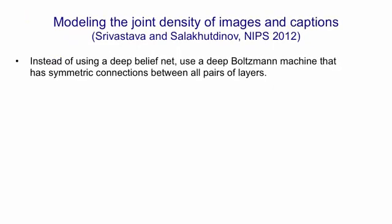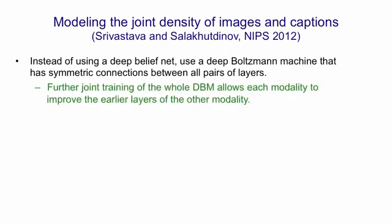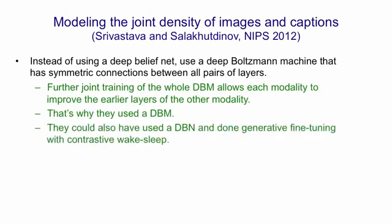Instead of using a deep belief net, which is what you might expect, they used a deep Boltzmann machine, where there's symmetric connections between all pairs of layers. The further joint training of the whole deep Boltzmann machine is what allows each modality to change the feature detectors in the early layers of the other modality. That's the reason they used a deep Boltzmann machine. They could have also used a deep belief net and done generative fine-tuning with contrastive wake-sleep, but the fine-tuning algorithm for deep Boltzmann machines may well work better.